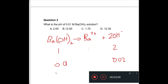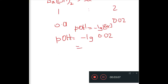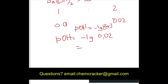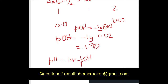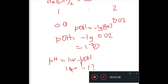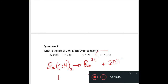When you do the negative log of that, you have to be careful because what you'll be getting is pOH. So when you do negative log of 0.02 you get the pOH as 1.70. Now pH plus pOH equals 14, so pH will be 14 minus 1.70, which gives you 12.30. Our answer is D.